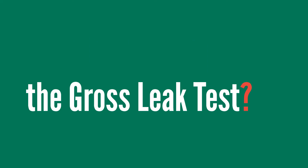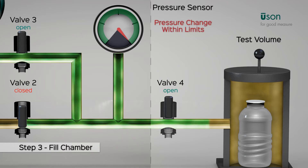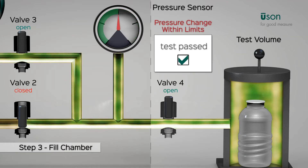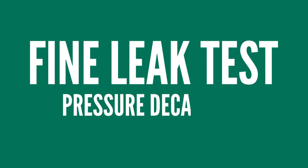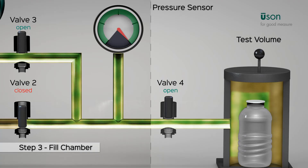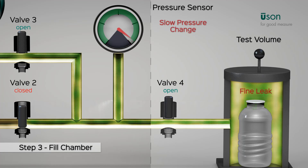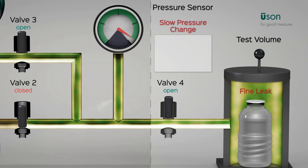This is where the fine decay leak test comes into play. The fine decay leak test is performed with a pressure decay test. As shown in this animation, the stabilize and measure steps allow for measuring a slow decrease in pressure over a pre-specified amount of time based on the application requirements. A slow drop in pressure below acceptable limits indicates a fine leak.